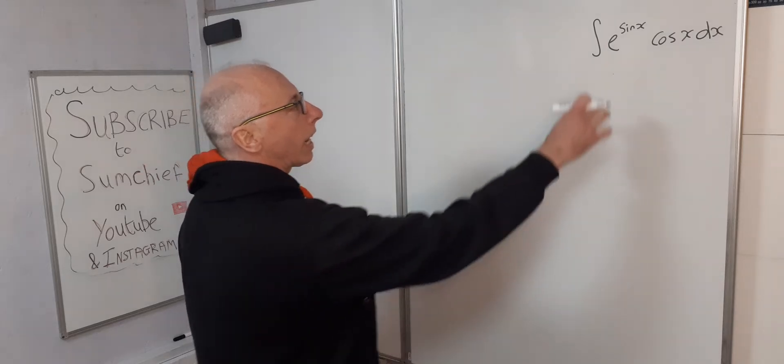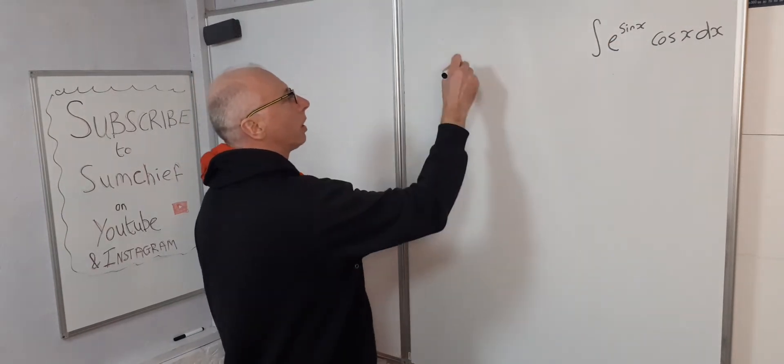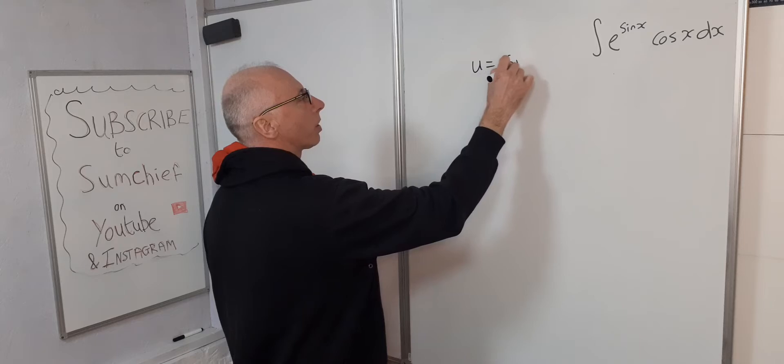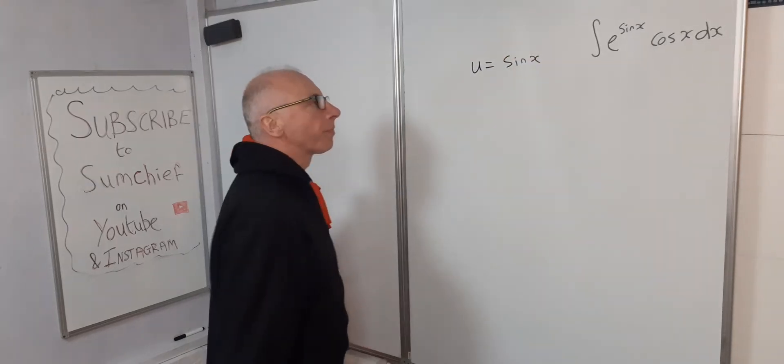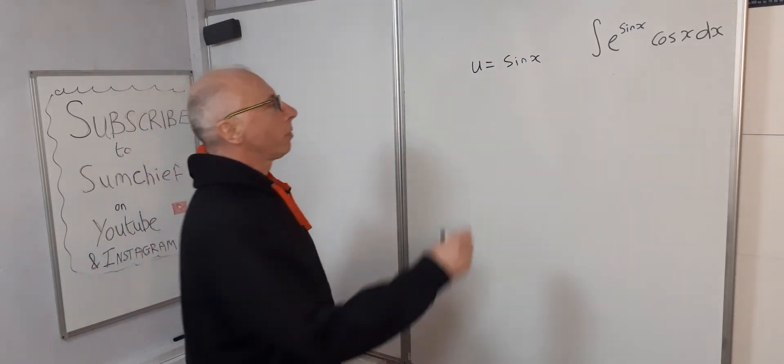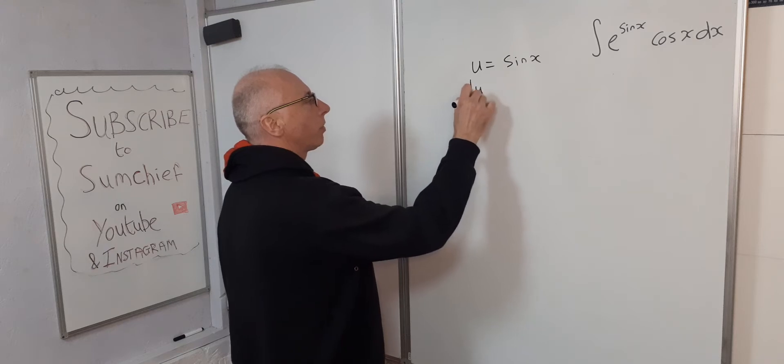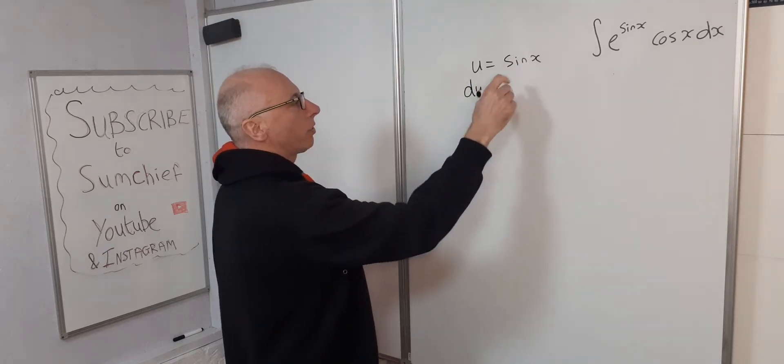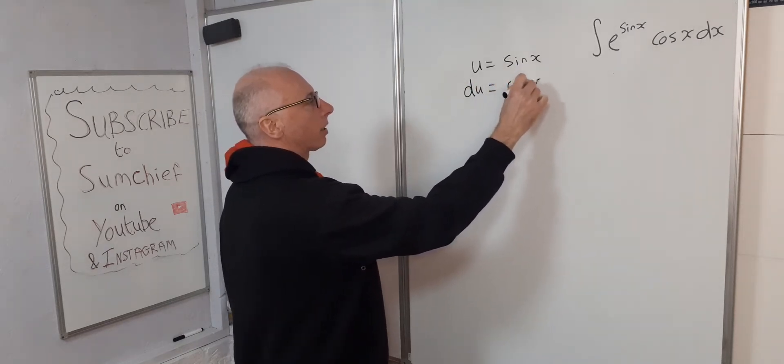So, as we've got the sine x to the power of the exponential, let's do u equals sine x. Now we take the derivative on both sides. So the derivative of u is du. Derivative of sine x, cosine x.